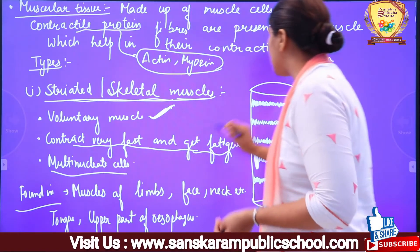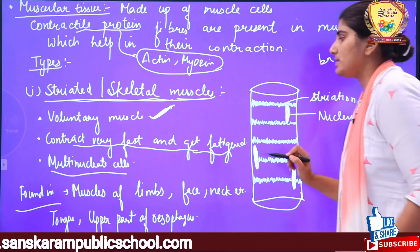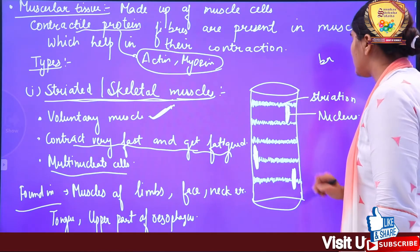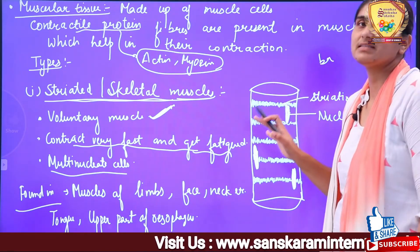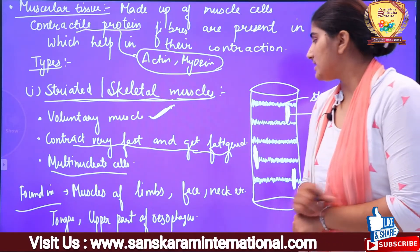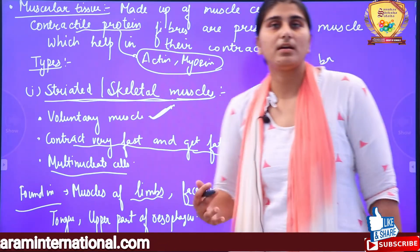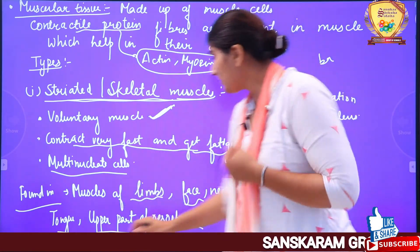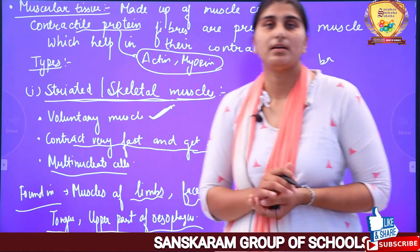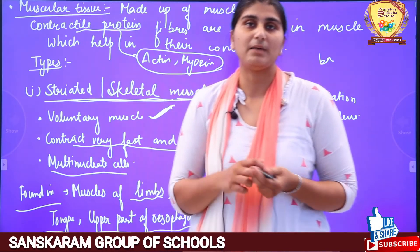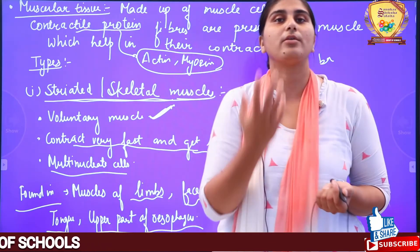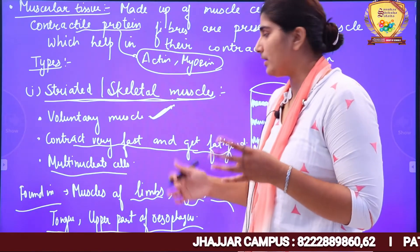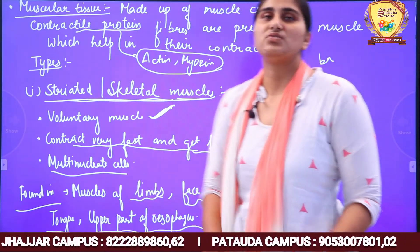These muscle cells are multi-nucleate — you will see more than one nucleus in them. Looking at the diagram, you can see bands and multiple nuclei. Striated muscles are found in limbs (hands and legs), face, neck, tongue, and upper part of the esophagus. The tongue can move because there are striated muscles here. Up to the upper part of the food pipe, you can control when you swallow food; after that, you cannot stop its movement.